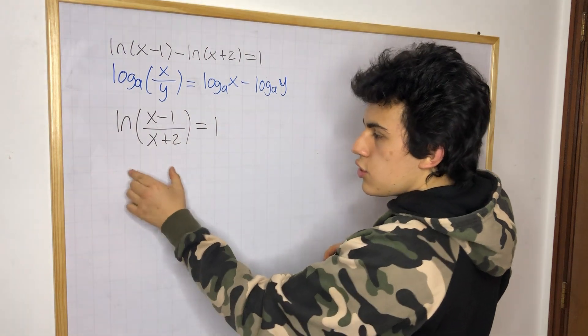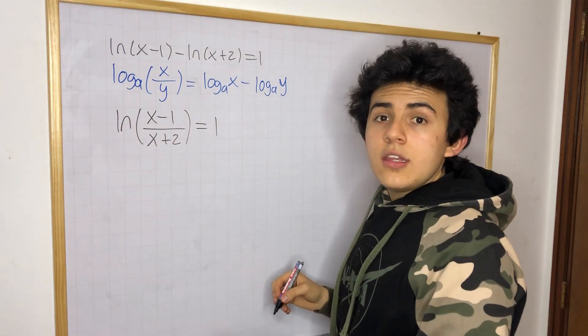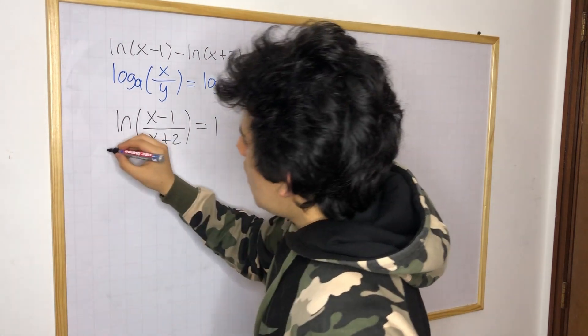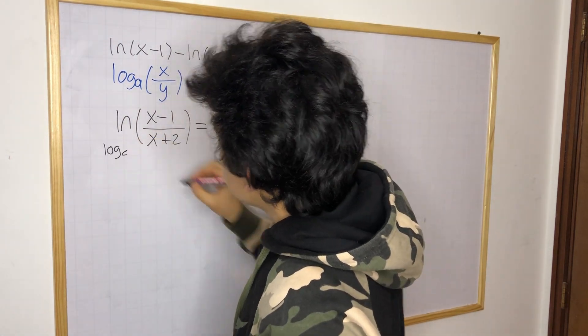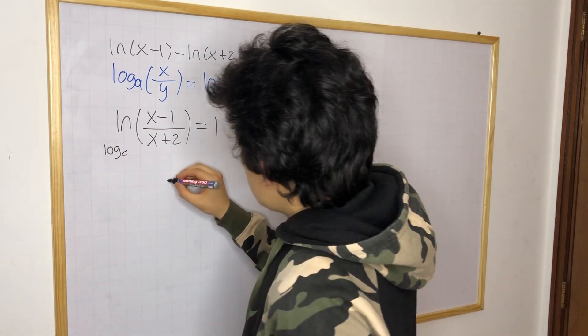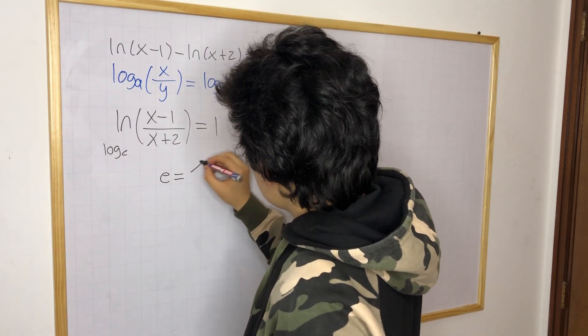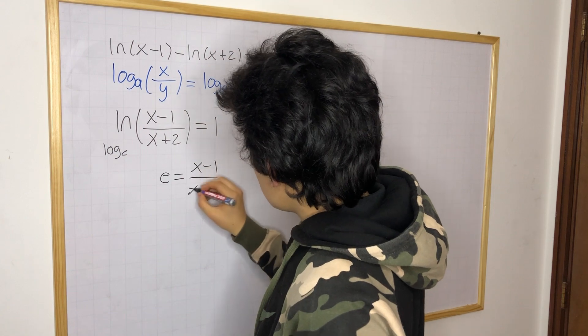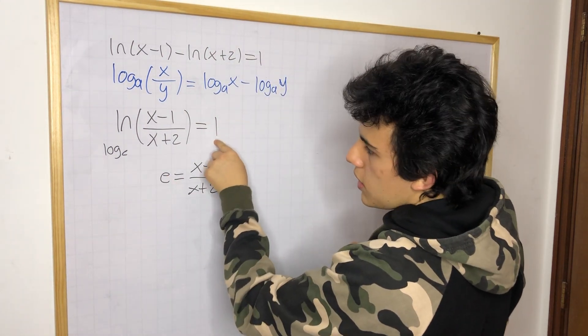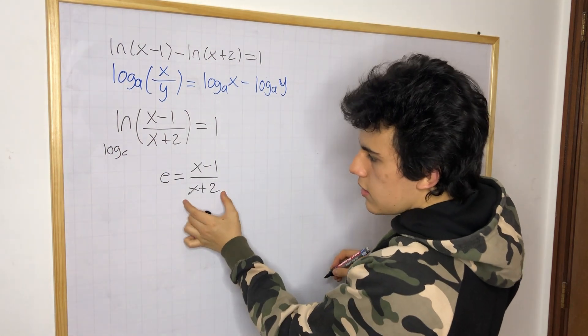Now since we have this form, we can transform this into exponential form. So we know ln is simply log with base e, so this is the same as if we did e is equal to x minus 1 over x plus 2. Because the result that we have is 1, so e to the first power is going to be this expression.